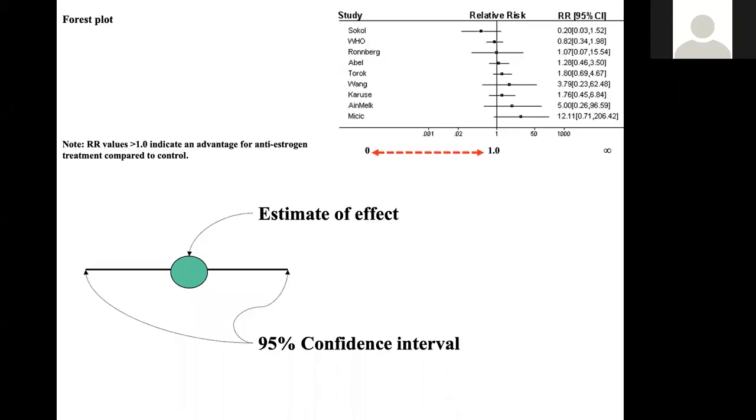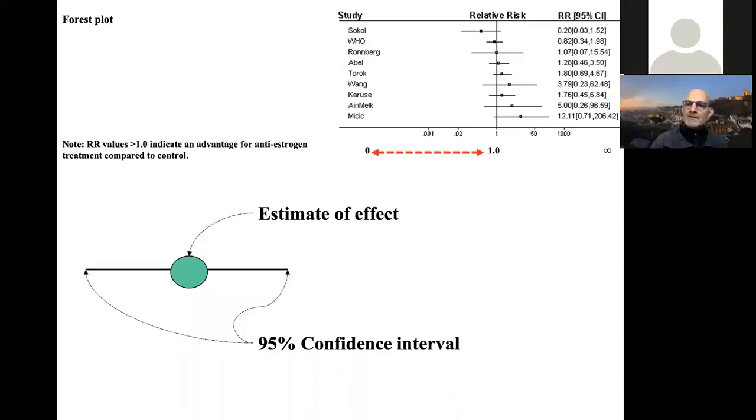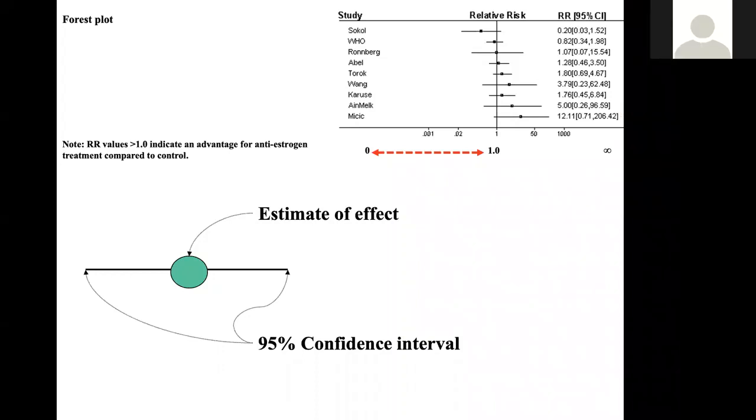The values less than one on the left-hand side show that the intervention is not effective, it is in fact possibly harmful. And on the right-hand side it shows that it is effective or beneficial to the patient compared to control.